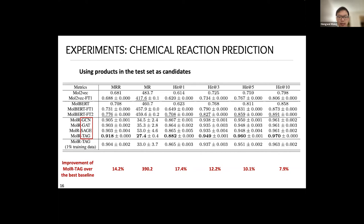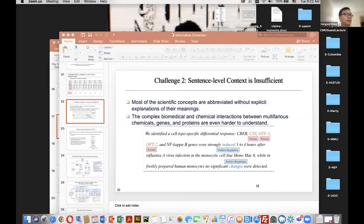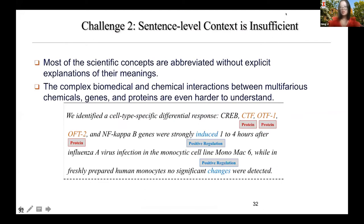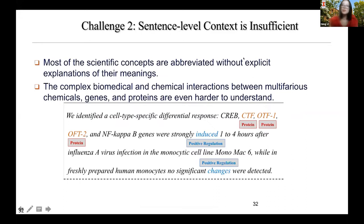Professor Heng-Ji will now discuss challenges two and three. The second challenge is that scientists write papers for scientists, so they don't explain many terms and abbreviations. If we use normal natural language understanding with contextualized embeddings at the sentence level, it won't capture the meaning of these specialized terms.